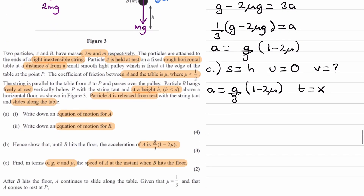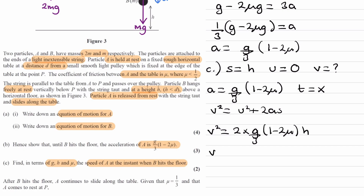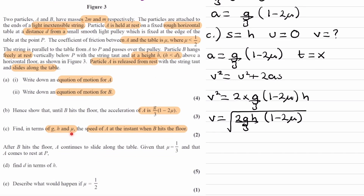The equation linking these quantities is v² = u² + 2as. So v² equals 0 plus 2 times (g over 3)(1 minus 2μ) times h. Therefore v equals the square root of 2gh over 3 times (1 minus 2μ). That is the speed of A in terms of g, h, and μ.